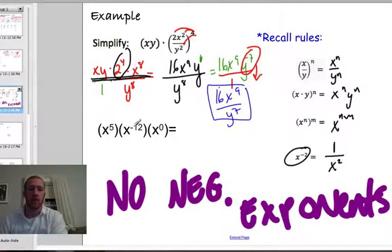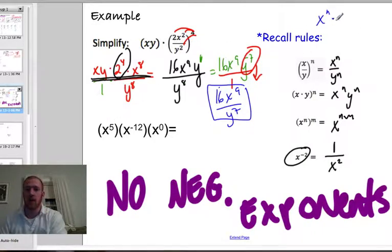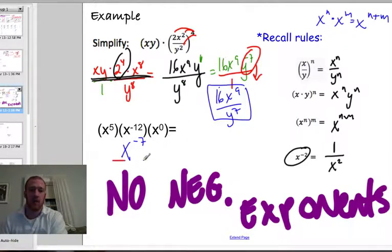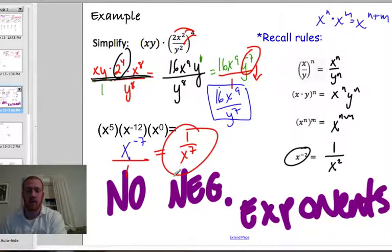Now let's use the product rule: x to the n times x to the m is x to the n plus m. So we get x to the 5 plus negative 12 plus 0, which gives x to the negative 7. No negative exponents — so that becomes 1 over x to the 7th as the final answer.